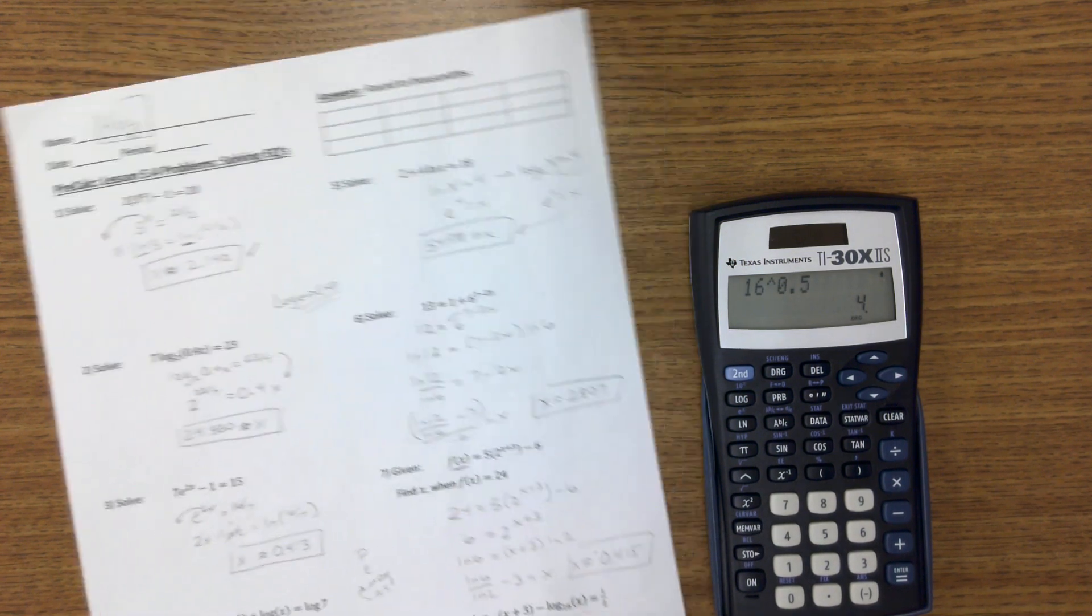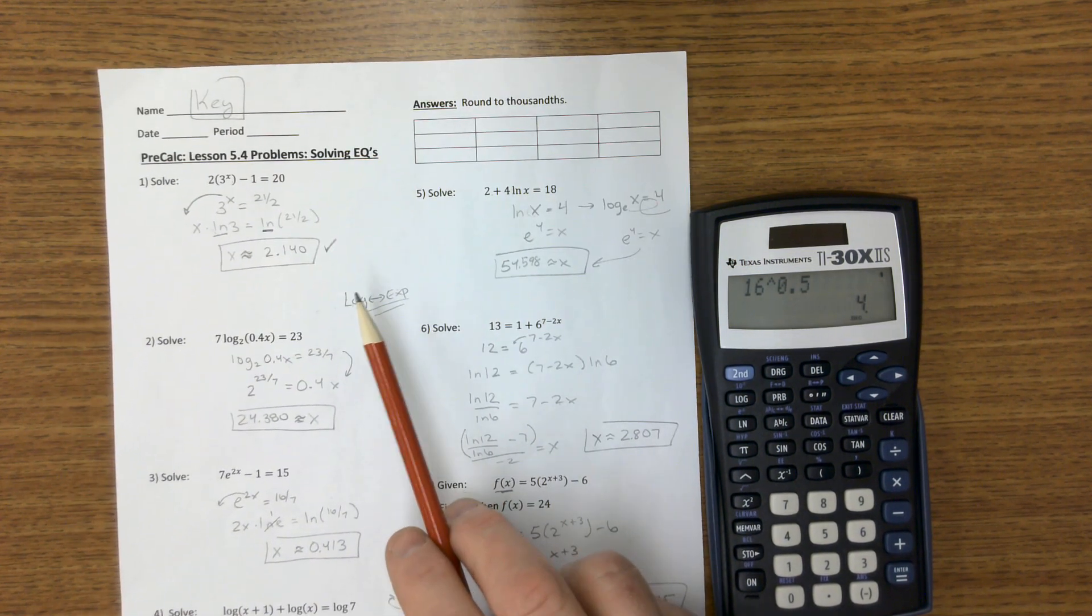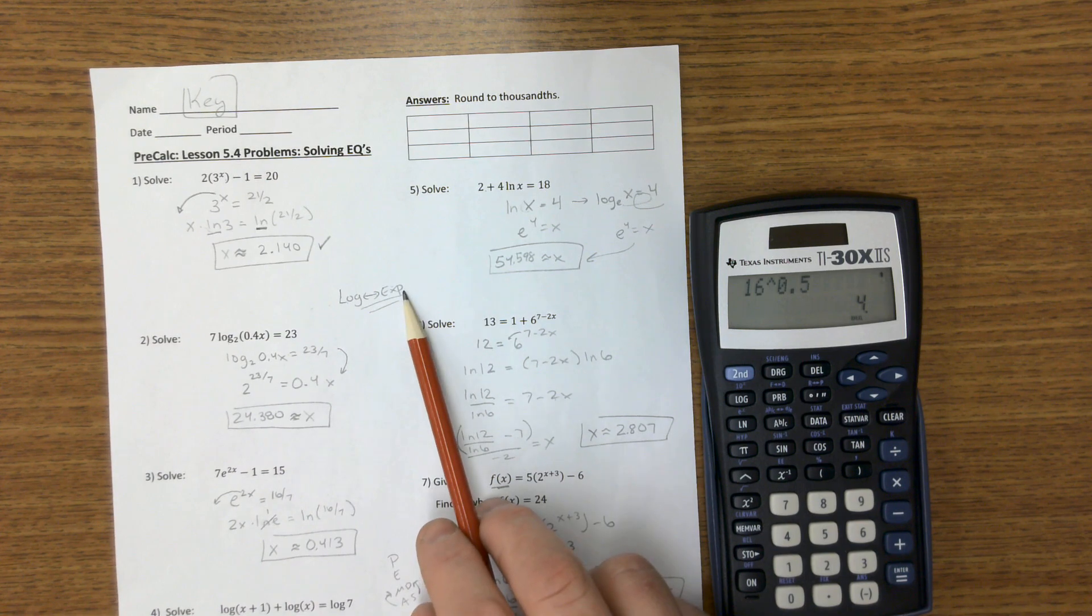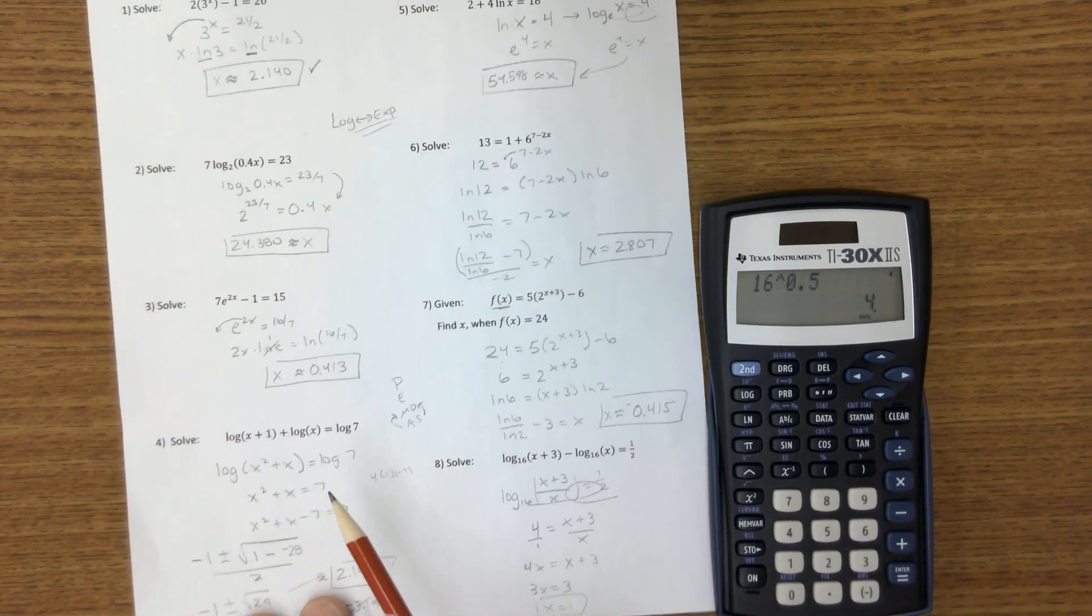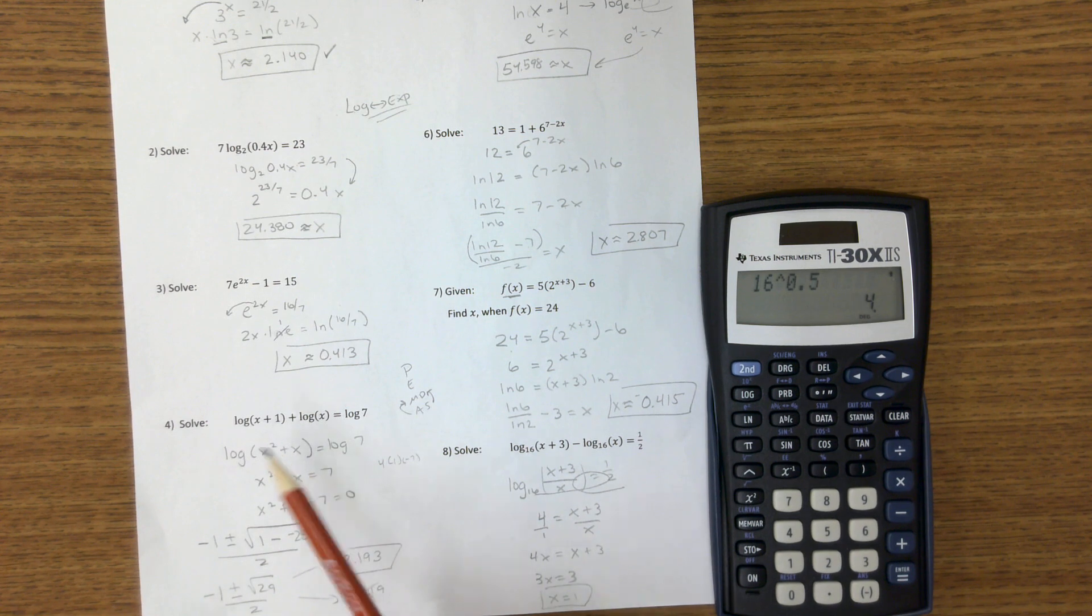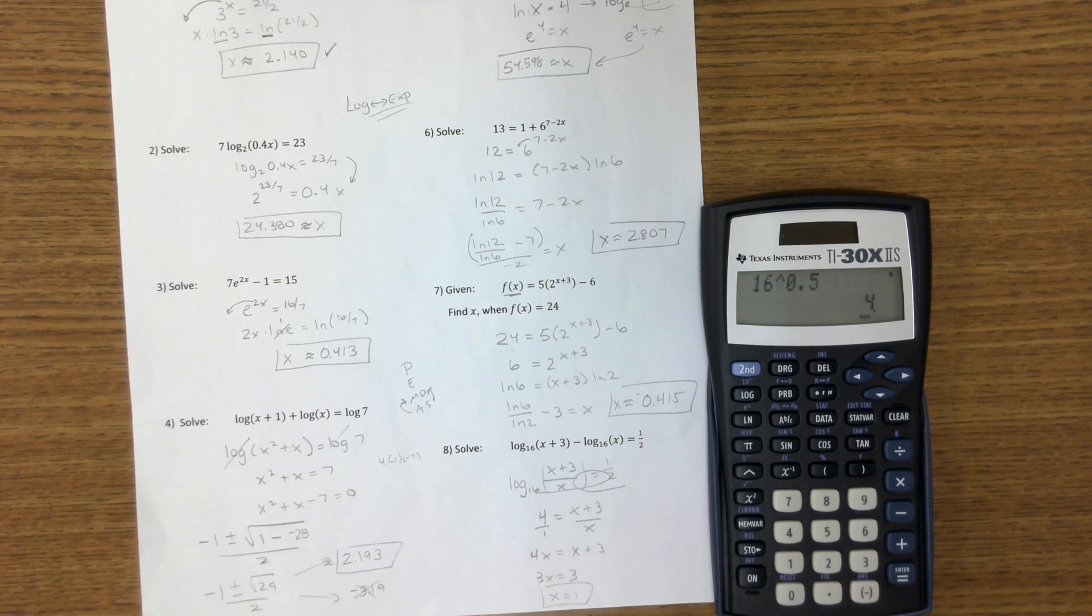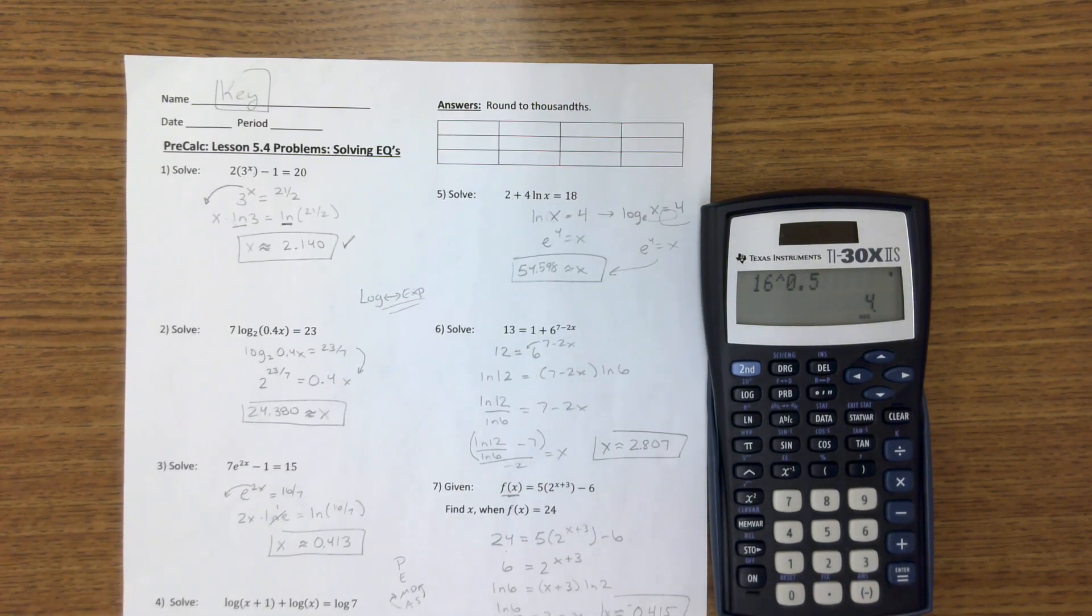All right, hope this helps. Again, the key is take logs, write them as exponents, take exponents, write them as logs. Unless you have a real easy one like this, you don't need to do anything here. But use the 1 to 1 property so they're gone. All right, hope this helps with your homework.